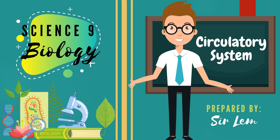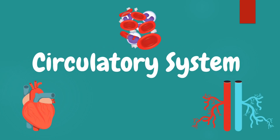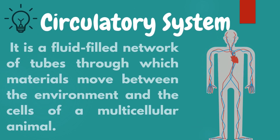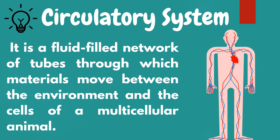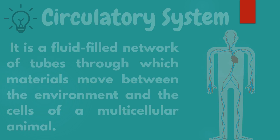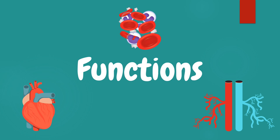Hello students, congratulations — we are done with all the topics for our bridging program. For today's video we will start with our first topic in Grade 9 Biology: the circulatory system. To start our lesson, let's define the circulatory system. It is a fluid-filled network of tubes through which materials move between the environment and the cells of a multicellular organism.